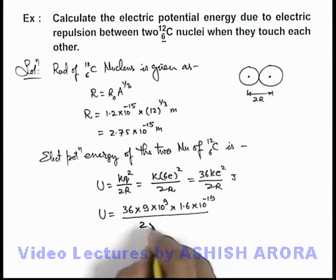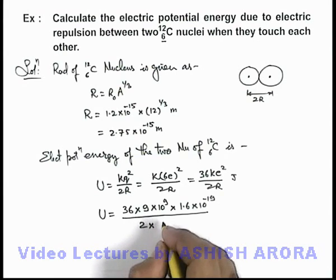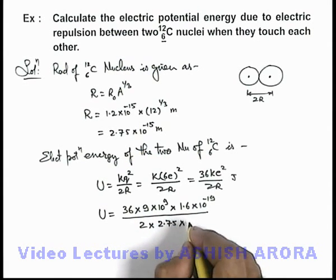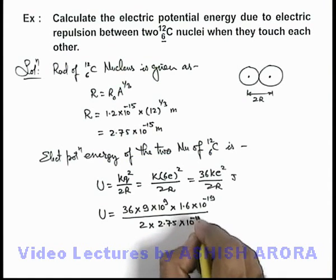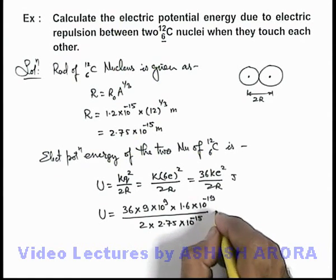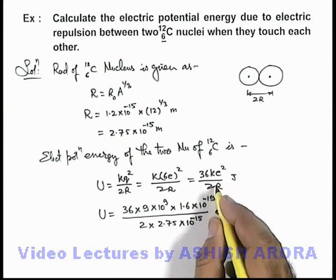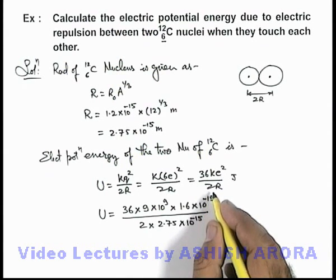Divided by twice the radius of each nucleus, which is 2.75 × 10⁻¹⁵. And this result will be in electron volts because I have taken only one e, as I have divided the expression by e only.